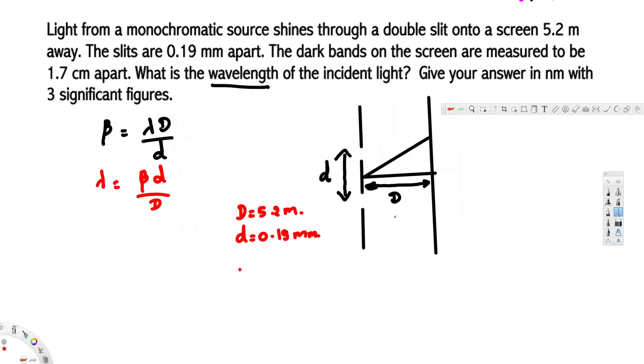Now we can calculate this value. Lambda is equivalent to 1.7, and since this is in centimeters we have to multiply by 10 to the power minus 2 to convert to meters. Then we have slit separation, 0.19 millimeters. To convert to meters, we multiply by 10 to the power minus 3. We divide this by the distance from the slit to the center of the screen, which is D, equal to 5.2 meters.